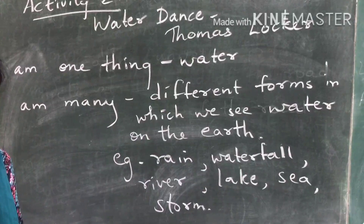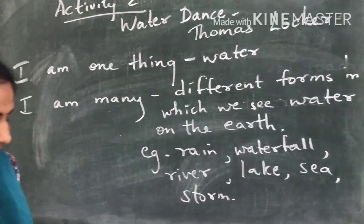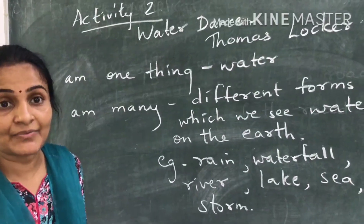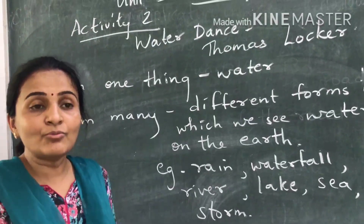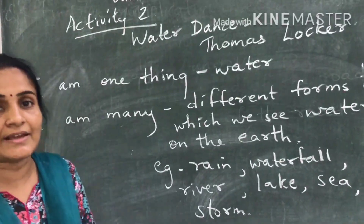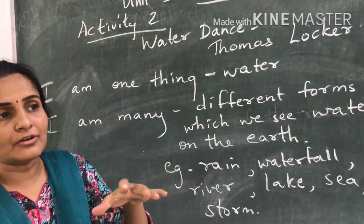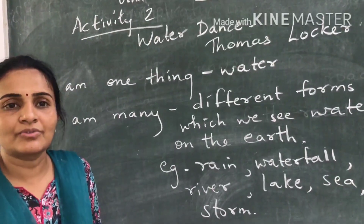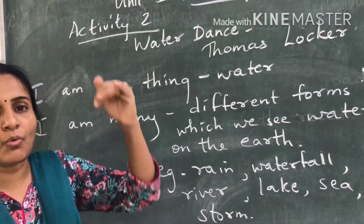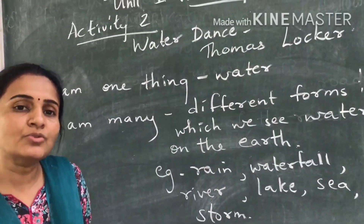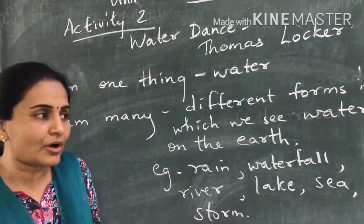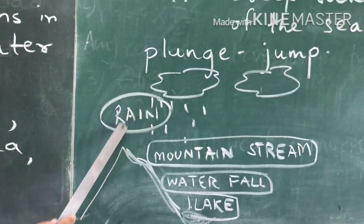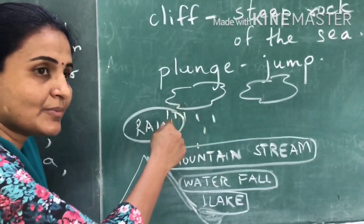The first stanza says: 'Some people say that I am one thing, others say that I am many. Ever since the world began I have been moving in an endless circle. Sometimes I fall from the sky.' The poet is talking about the water cycle. Water from the surface evaporates because of the heat of the sun, rises and cools down — that is condensation — turning into water vapor, which forms clouds. When the clouds become very heavy, water comes down as rain. So the first form of water the poet mentions is rain.